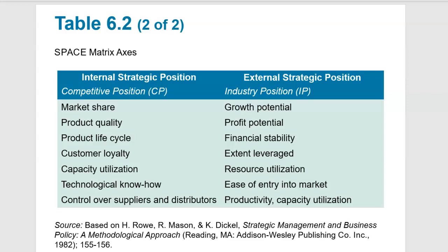The soda industry has a huge amount of control over their distributors—in some cases they own the distribution networks and even own the shelf space. The stronger control you have over your distributors, the more you can lock out competitors from using them. For the industry position, we look at growth potential, profit potential, financial stability, the level of leverage that can be used, resource utilization, ease of entry into the marketplace, productivity, and capacity utilization. For semiconductors, capacity utilization is critical: they need to run massive foundries producing millions of chips to cover huge fixed costs.